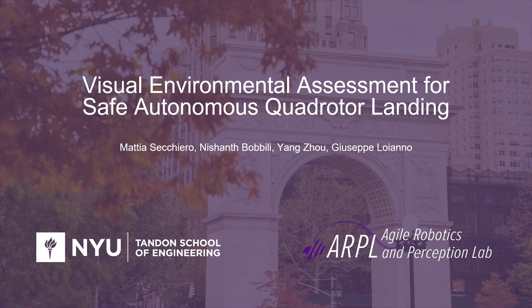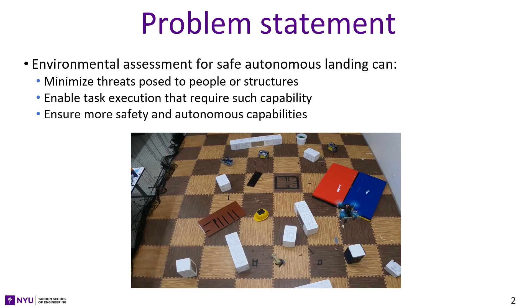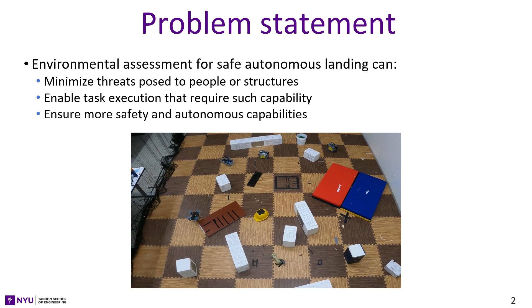In this video, we present our paper: Visual Environmental Assessment for Safe Autonomous Quadrotor Landing. Autonomous identification and evaluation of safe landing zones are of paramount importance for ensuring the safety and effectiveness of aerial robots in the event of system failures, low battery, or the successful completion of specific tasks.